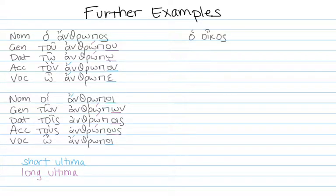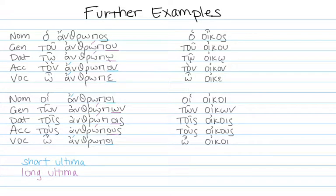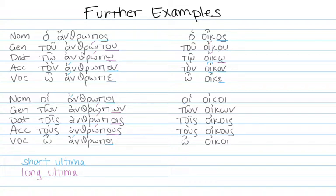Now let's look at ho oikos. You learn what it is and where it is in the nominative, then apply rules for the rest. In the singular, with a short ultima, the circumflex gets to remain: ton oikon and o oike. In the genitive and dative singular, it's now a long ultima, so that circumflex on the penult must change to an acute: tu oiku and to oiko. In the plural, even though oi looks long it's treated as short: hoi oikoi and o oikoi. The other three look long and are treated as long: ton oikon, tois oikois, and tu oikoos.